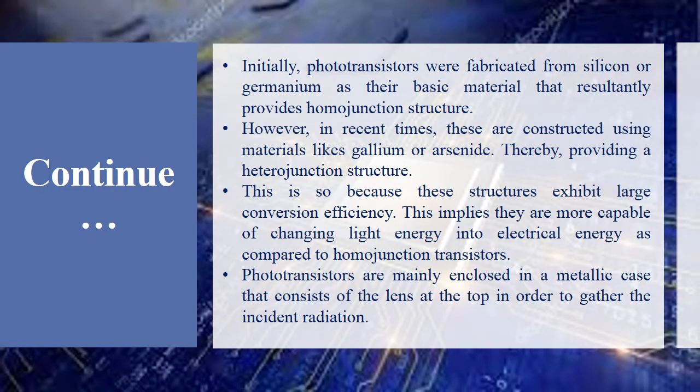Initially, phototransistors were fabricated from silicon and germanium as the basic material, which resultantly provided a homojunction structure. However, in recent times, these are constructed using materials like gallium arsenide, which creates a heterojunction structure. This is because heterojunction structures exhibit large conversion efficiency — when we convert light into electrical energy, heterojunction structures increase the conversion efficiency.